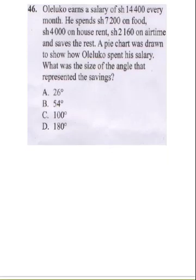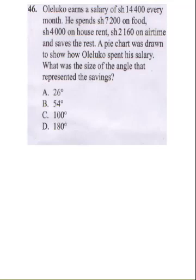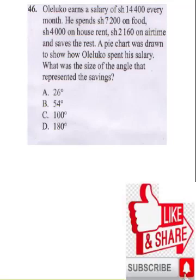Olay Luko earns a salary of 14,400 shillings every month. He spent 7,200 on food, 4,000 on house rent, and 2,160 on airtime, and saves the rest. A pie chart was drawn to show how he spent his salary. What was the size of the angle that represents the savings?